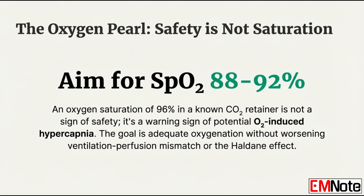Given these two powerful mechanisms, the specific oxygen saturation target is very firm: aim for an SpO2 of 88 to 92%. This gives enough oxygenation while minimizing both the Haldane effect and VQ mismatch reversal. A saturation of 96% should not feel safe — it should raise an alarm bell. A sat of 96% is a warning sign of impending severe hypercapnia; you're giving way too much oxygen and risk tipping the patient into a coma. Trust the physiology and titrate oxygen down.